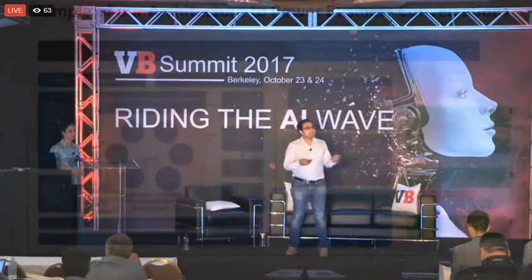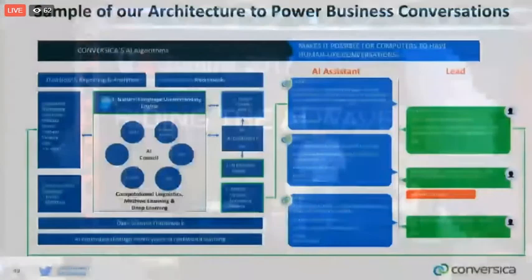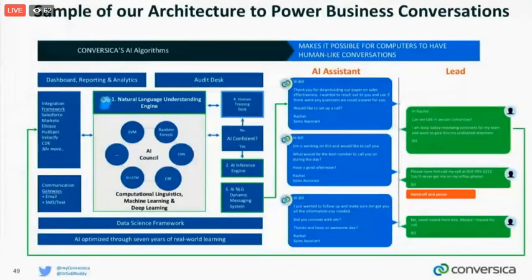These intents and entities are passed to our AI inference engine. The inference engine decides what actions to take based on the intents and entities, and these are passed to our natural language generation system again, which generates the next set of conversations dynamically. This is not a single-turn conversation — it is a multi-turn conversation that happens again and again, multiple times.